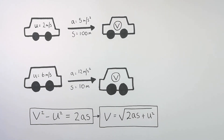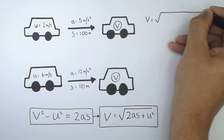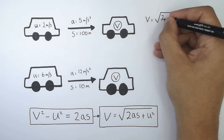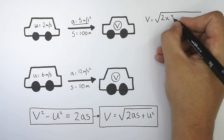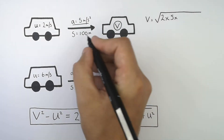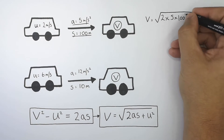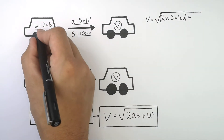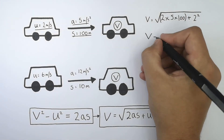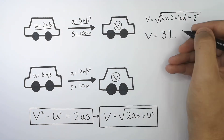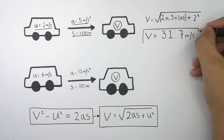Now we substitute in the numbers. v, the final velocity, equals the square root of 2 times the acceleration, which is 5 metres per second squared, times the displacement s, which is 100 metres. We add that to u squared, which is 2 squared, so that's 4. So v equals 31.7 metres per second.